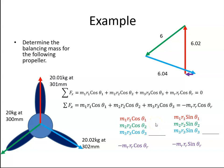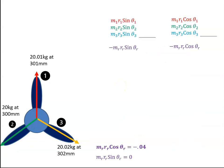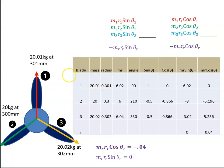So here's my table. Blade one is 20.01 at 301 millimeters which is 0.301 meters, so I get MR. I have the angle measured from here, so that's 90 degrees, that's going to be 210, and that's going to be 330. So I have my mass and my radius for each blade.